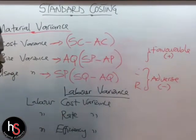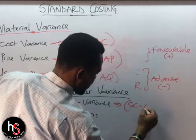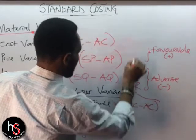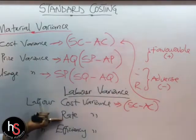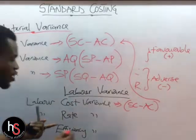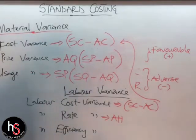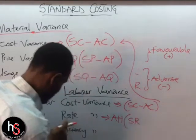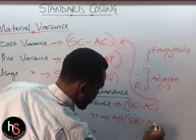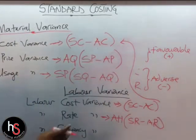The labor cost variance is the standard cost minus the actual cost, just as with material. For the labor rate variance, the formula is: Actual Hours × (Standard Rate − Actual Rate). That is the formula for the labor rate variance.